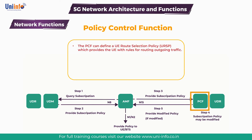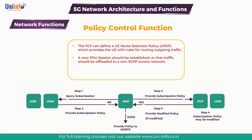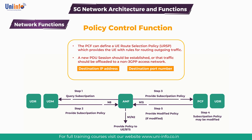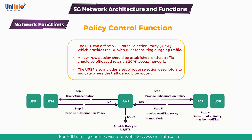The PCF can define a UE route selection policy which provides a UE with rules for routing outgoing traffic. The rules can indicate that traffic should be routed to an existing PDU session, that a new PDU session should be established, or that traffic should be offloaded to a non-3GPP access network. The URSP includes a set of traffic descriptors which allows the UE to recognize a specific type of traffic, for example destination IP address, destination port number and higher layer protocol identity. The URSP also includes a set of route selection descriptors to indicate where the traffic should be routed, for example a specific data network name.